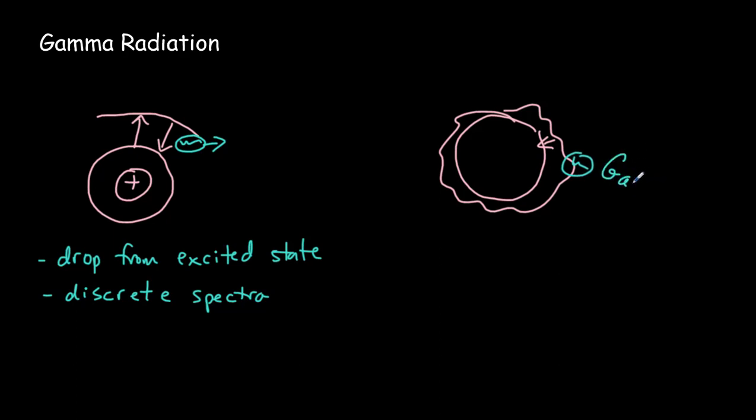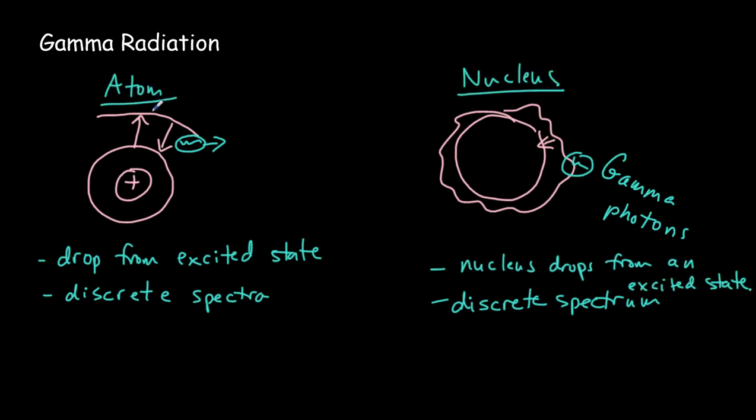And the nucleus would have multiple discrete energy levels, leading to a discrete spectrum of these gamma-ray photons. Each being derived because the nucleus drops from an excited state. So there's an exact parallel between the energy levels of an atom and the energy levels of a nucleus.